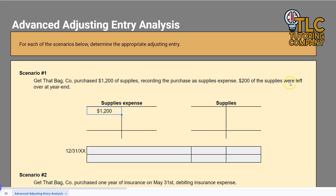It tells us that $200 of the supplies were left over at year end. I recommend looking at two things: one, what we did — in this case we debited supplies expense — and two, the additional piece of information they give us. They're telling us that $200 of supplies were left over. So is that the supplies expense for the year, or the supplies balance we should have at the end of the year? If we have $200 left over, that is the ending balance we're trying to achieve in supplies, which means we must have used $1,000.